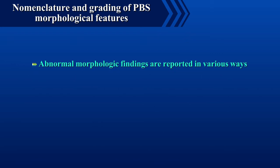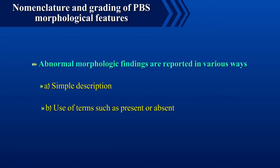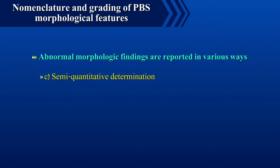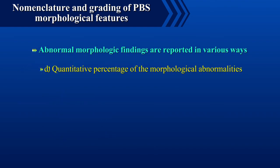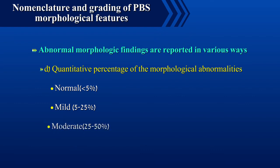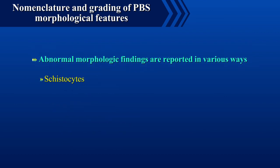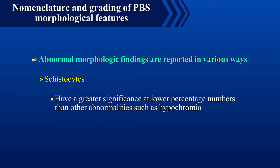This video will throw light on the nomenclature and grading of peripheral blood smear morphological features. Abnormal morphologic findings are reported in various ways: as a simple description, by the use of terms such as present or absent, by a semi-quantitative determination like mild, moderate, or marked, or by a quantitative percentage of abnormal morphological findings. Certain morphological abnormalities, for example cystocytes, will have greater significance at lower percentage numbers than other abnormalities such as hypochromia.